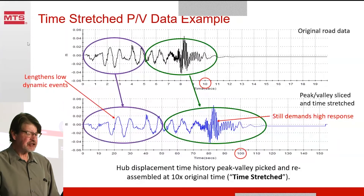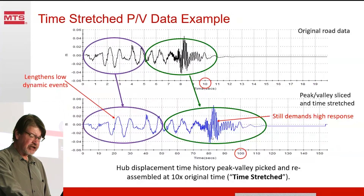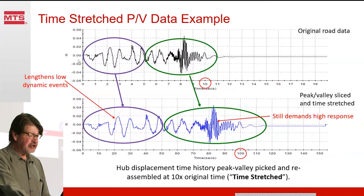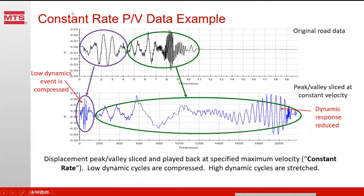Here's an example of a time-stretched peak valley result, where we took a constant time expansion to slow down a very fast event to reduce the oil flow demand. Unfortunately, when we time-stretch everything uniformly, slow events also get stretched out, which is not advantageous because it increases test time without improving throughput. So instead we play back with a constant rate — connecting the dots together with a constant velocity. Now we can compress our very slow events and expand our high dynamic events, so we don't have so much dynamics but we still get all the same displacements. The result is the same fatigue damage played out with a much lighter power requirement.